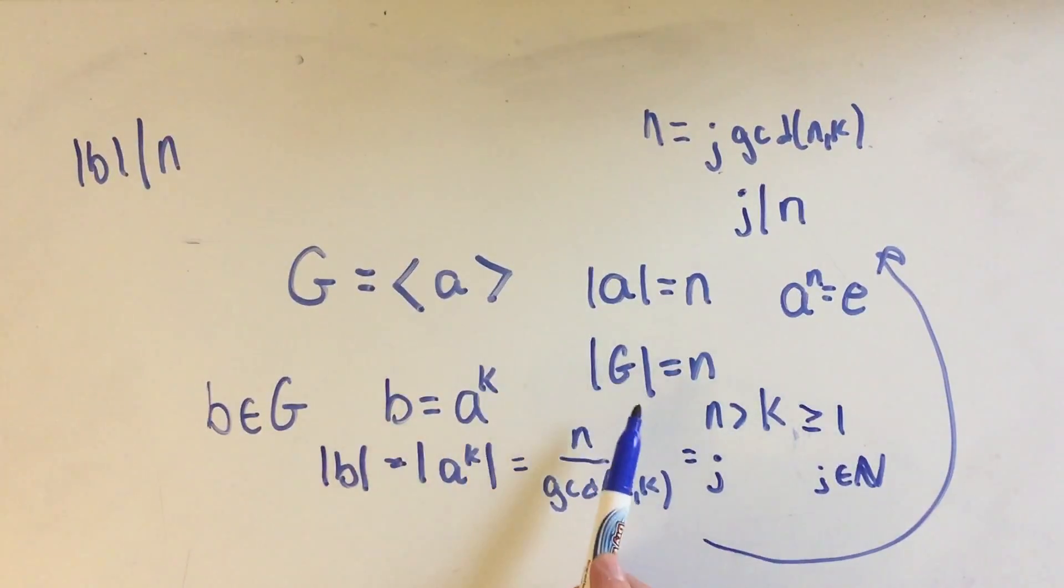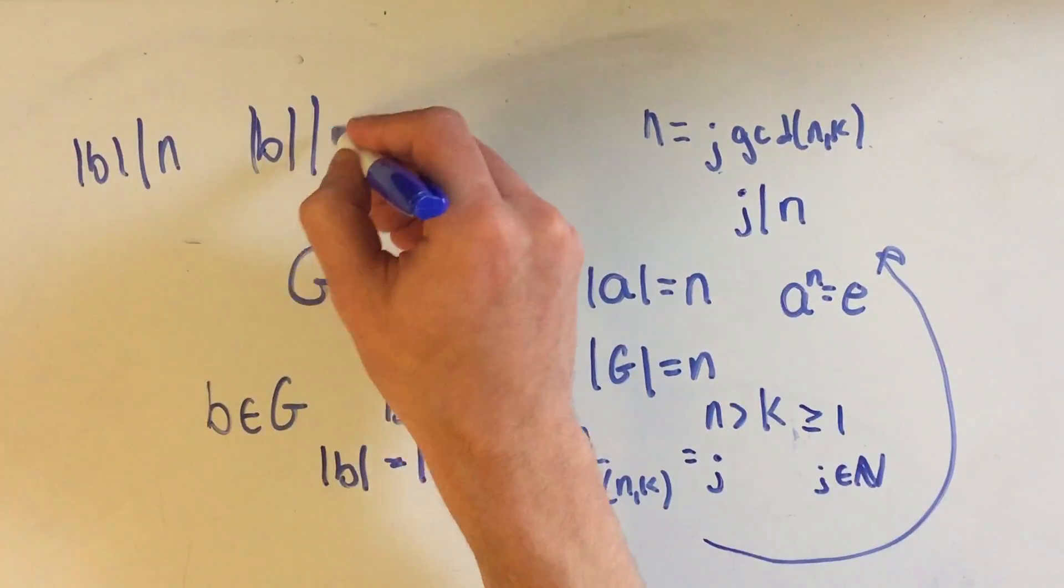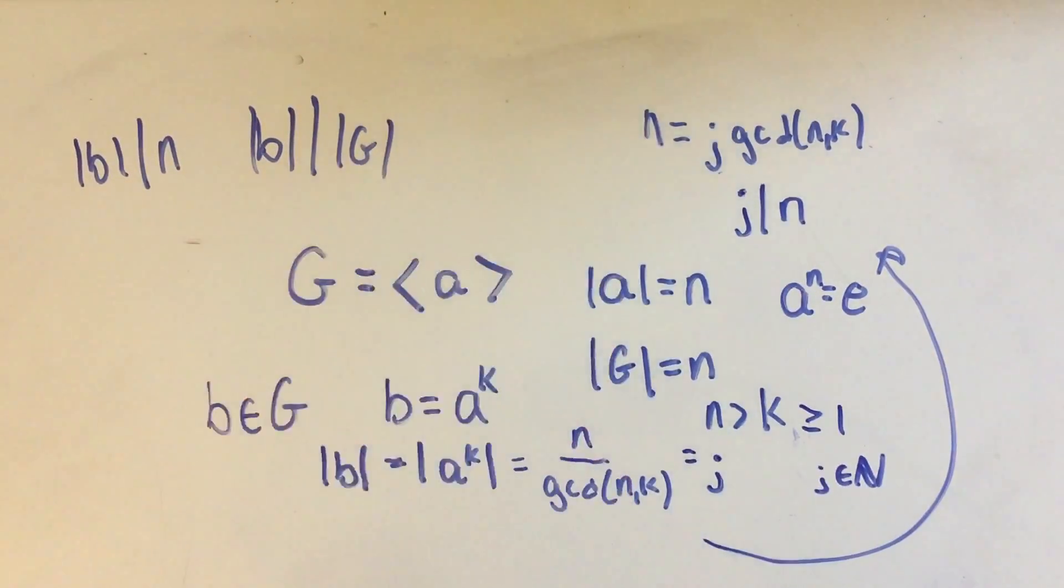But remember, N was the order of the group. So the order of any element divides the order of the group, and our theorem is proved.